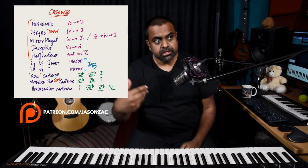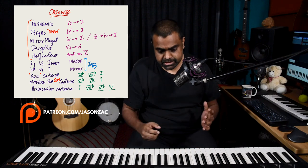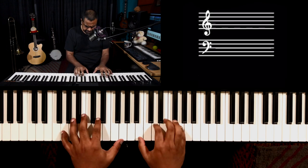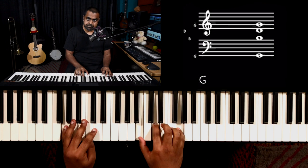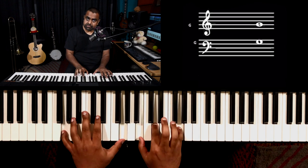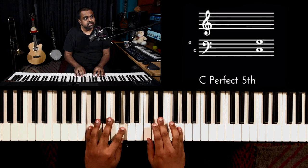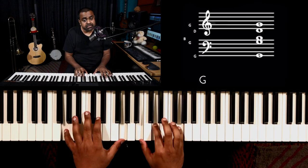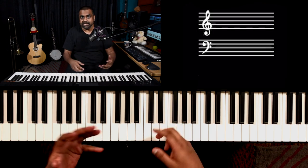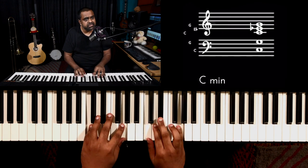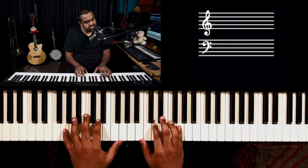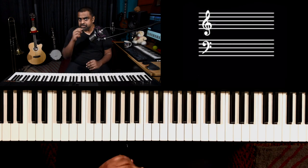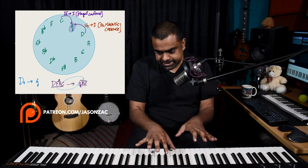Traditionally the plagal cadence is 4 going to 1. You could also do a 4 minor going to the 1 major — this is a very beautiful sound. If you take the key of G again, the 4 is C. Normally the Amen cadence is major 4 going to major 1, but what if you did a minor 4 going to the major 1? It's so nice you can just use these two chords alone as your melody. Very good for Eastern music or Indian music.